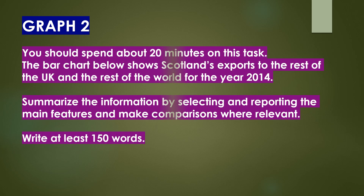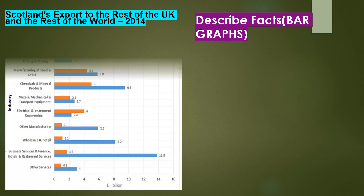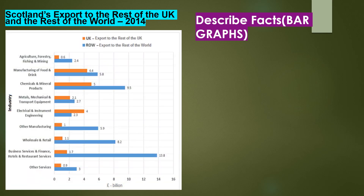Let's take a look at the next recent exam question. You should spend about 20 minutes on this task. The bar chart below shows Scotland's exports to the rest of the UK and the rest of the world for the year 2014. Summarize the information by selecting and reporting the main features and make comparisons where relevant. Write at least 150 words. Now let's take a look at the bar graph — this is Scotland's export to the rest of the UK and the rest of the world in 2014.